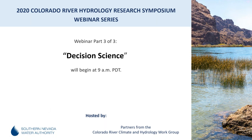Good morning everyone. It is nine o'clock and I want to welcome you all to the 2020 Colorado River Hydrology Research Symposium webinar series. Today is the last of a three-part series of webinars. The first was held on October 8th regarding new models and data to inform water supply forecasts, and the second was held on October 19th called Prospects for Advancing Hydroclimate Prediction at Seasonal and Longer Timescales. My name is Seth Shanahan and I'm a Colorado River Programs Manager for the Southern Nevada Water Authority. Today's webinar and the past webinars are brought to you by both SNWA and our partners from the Colorado River Climate and Hydrology Work Group, and today's webinar is particularly focused on decision science.